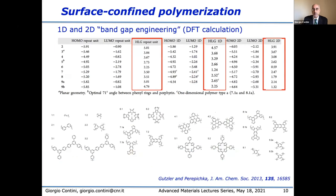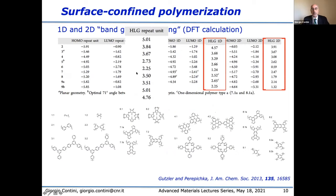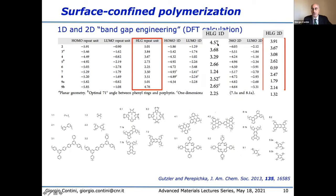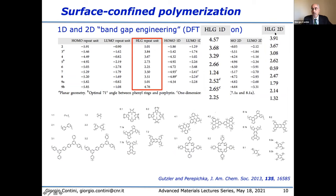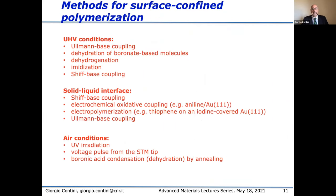By this surface-confined polymerization, we can do something that can be called bandgap engineering. These calculations take into account different monomers with different HOMO-LUMO gaps, calculated as a function of one-dimensional and two-dimensional arrangements. As a function of the monomers, in principle it is possible to obtain different materials with different HOMO-LUMO gaps. Several methods can be used for surface-confined polymerization: ultra-vacuum conditions, solid-liquid interface, and air conditions.